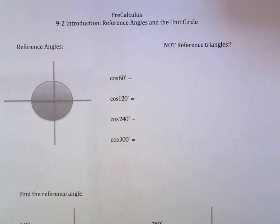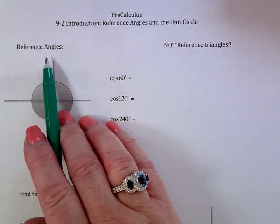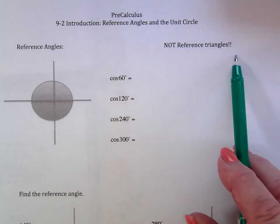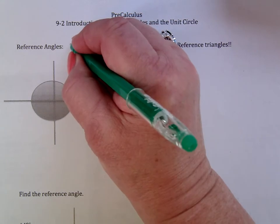Precalculus kids, we're looking at section 9-2, an introduction before we get into the actual section itself, talking about reference angles in the unit circle. This brings up a different topic called reference angles. It's different than reference triangles that we were talking about back in the last section.